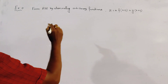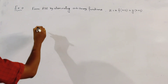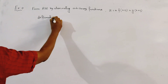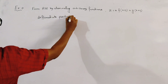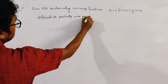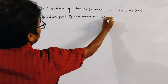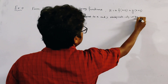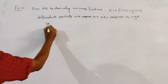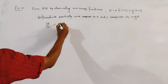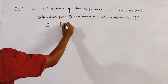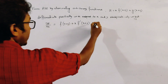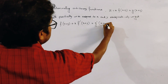We first differentiate partially with respect to x, then with respect to y. Differentiating with respect to x, we get del z by del x equal to f of (x plus y) plus x into f dash (x plus y) plus g dash (x plus y).